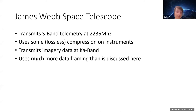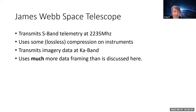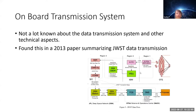James Webb transmits S-band telemetry at 2.235 GHz. It uses compression on instruments — remember why bandwidth matters. It transmits imagery data on Ka-band, and it uses data framing, which essentially stuffs all the data into small chunks called packets. These packets are sent over the unreliable radio link and the file is reconstructed at the other end.